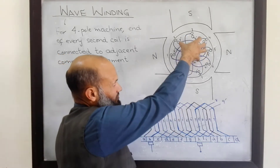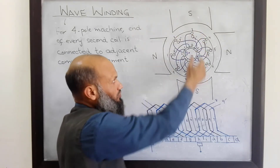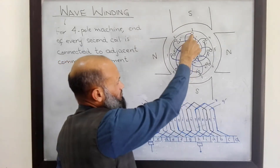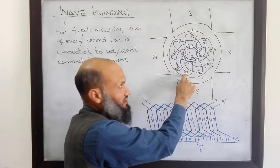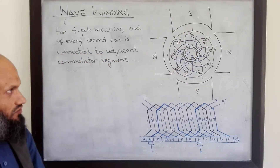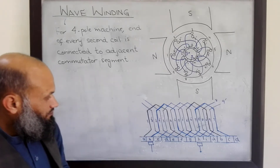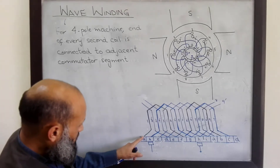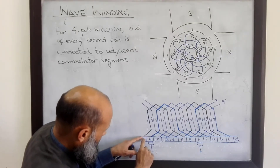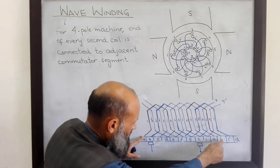Due to wear and tear, the rotor can move closer to one pole and move away from the other pole. And due to that, in some conductors the induced voltage will be larger, and in other conductors the induced voltage will be smaller. In case of lap winding, between two commutator segments — for example, let's see this first loop — between commutator segments A and B, two loops are connected.